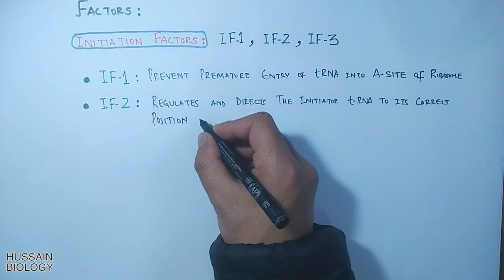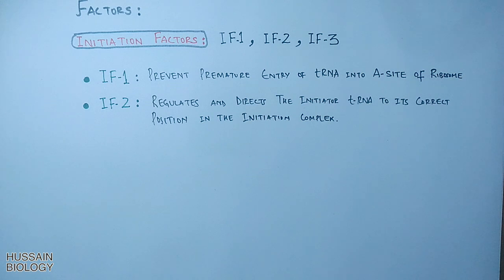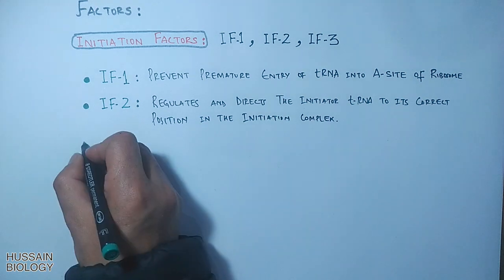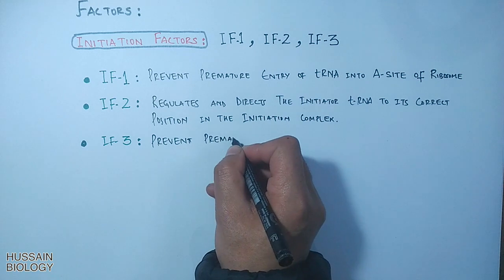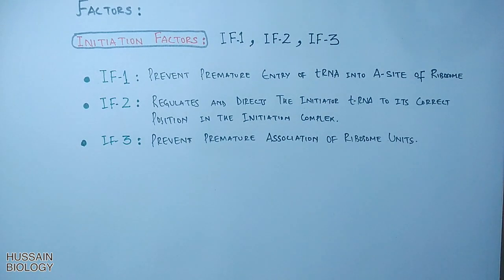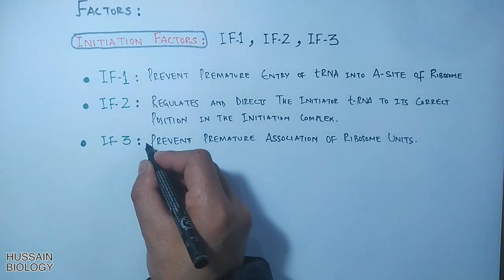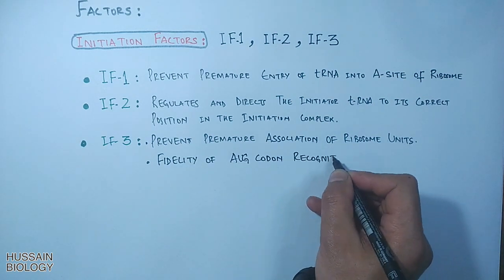IF2 binds the tRNA molecule and then takes it to the 30S subunit of the ribosome. The third initiation factor, IF3, functions to prevent premature association of ribosomal subunits, and it also functions as a fidelity factor for AUG codon recognition.